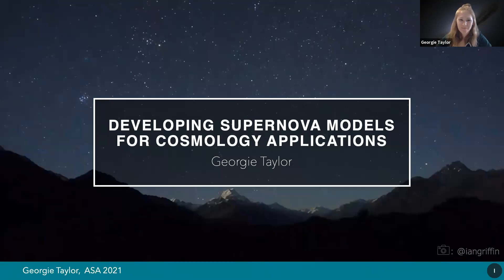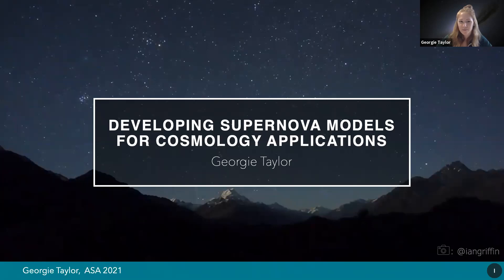Next talk: Georgie Taylor, a PhD student at the Australian National University, working on modeling Type 1a supernova light curves for cosmology applications. Although there's great research being done into supernovae in Australia, it's still a somewhat niche area for this audience, so today's talk will be kept general and accessible. We'll cover the basic mechanisms of Type 1a supernovae, how they're used in a cosmology analysis, and contributions focused on supernova spectroscopy and light curve modeling.